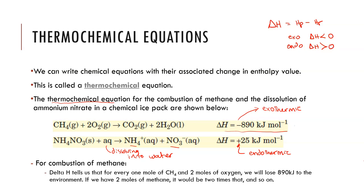The delta H, or change in enthalpy, tells us that for every mole of methane burnt, we give off 890 kilojoules of energy to the environment. If we had two moles of methane, we would multiply this value by two to work out the absolute amount of energy given off.